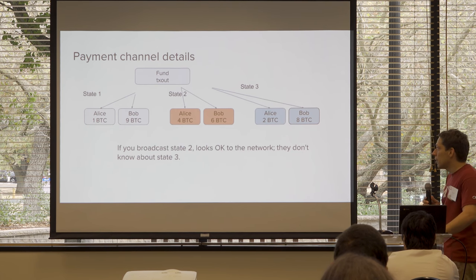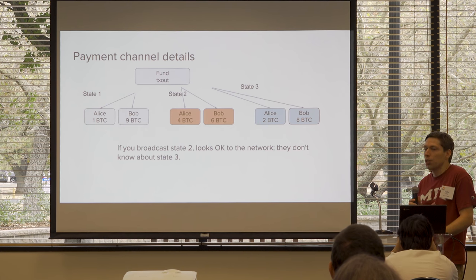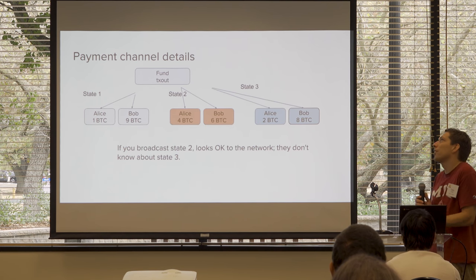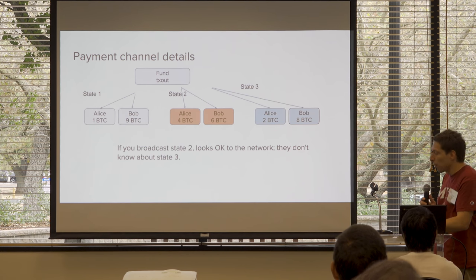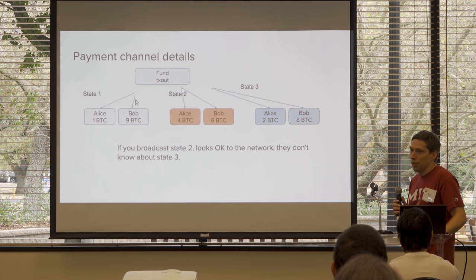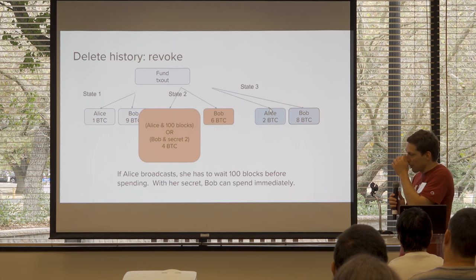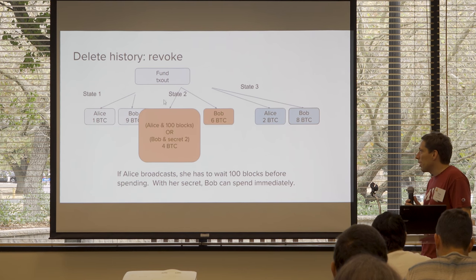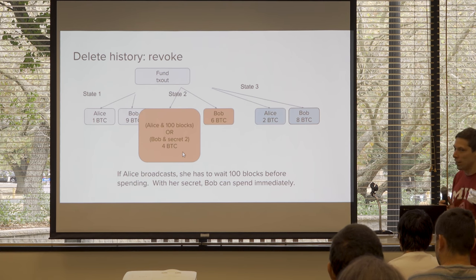What you need is a different script. These outputs are not just Bob and Alice — they are: Alice gets it if she waits 100 blocks, OR Bob gets it immediately if he knows a secret that Alice generates. They both hold mirror images of each other's transactions. The transaction Alice holds spends to Alice but she has to wait 100 blocks. The transaction Bob holds spends to Bob but he has to wait 100 blocks. The output for the other person — they get it immediately free and clear.